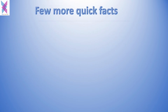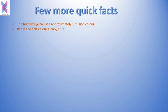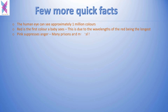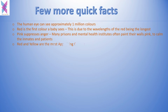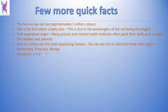Let us see some fun facts. The human eye can see approximately one million colors. Red is the first color a baby sees, due to red having the longest wavelength. Pink suppresses anger — many prisons and mental health institutes paint their walls pink to calm inmates and patients. Red and yellow are the most appetizing colors — you can see this in many fast food chain logos like McDonald's, Pizza Hut, and Wendy's.